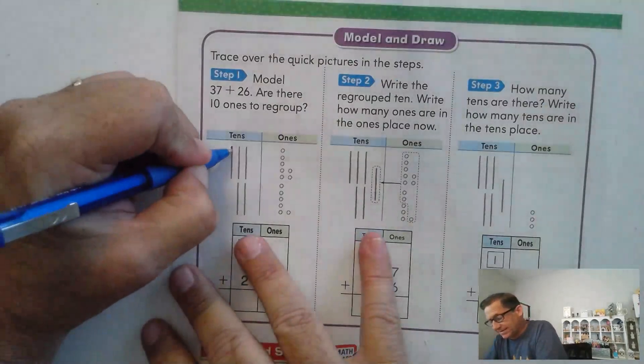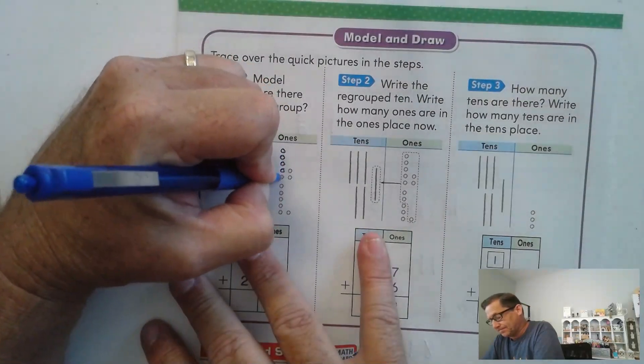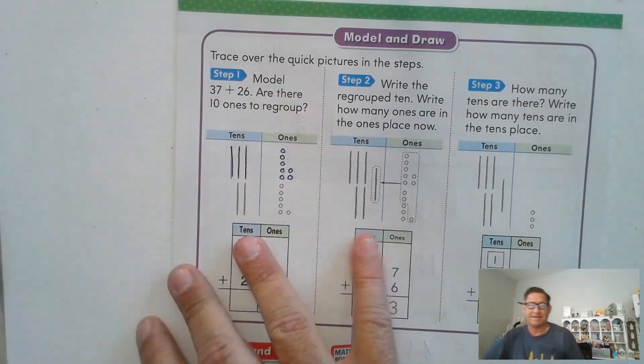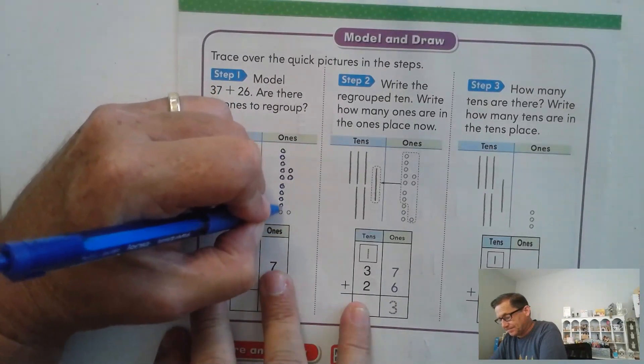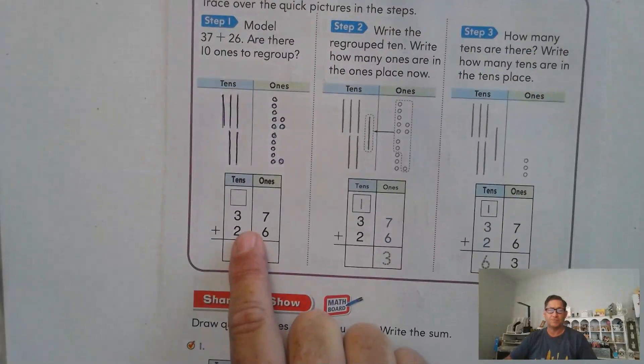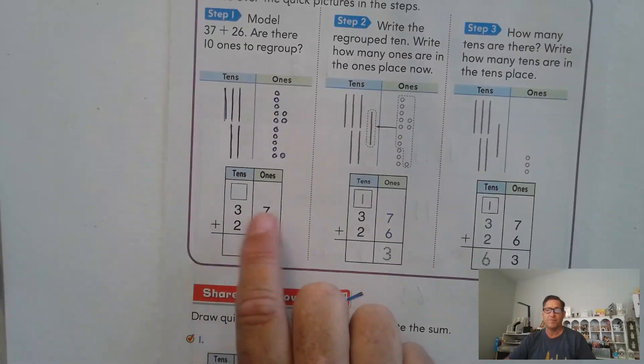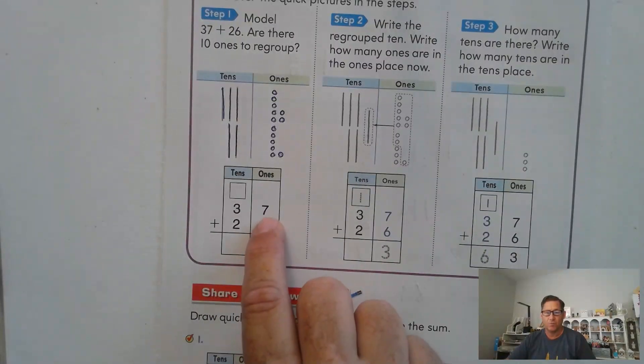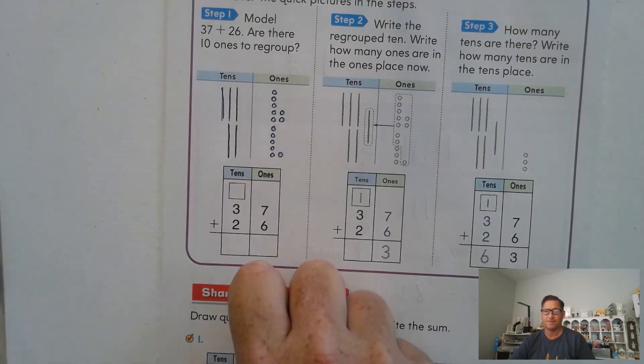So first we have 37. Let's go ahead and trace it. 37 has three tens and seven ones. And then we're going to add 26. So this is what it would look like. And what we would say is our regular addition problem, 37 plus 26. We'd line up the ones in both numbers and we'd line up the tens. This box up here is for if we have to trade any ones.